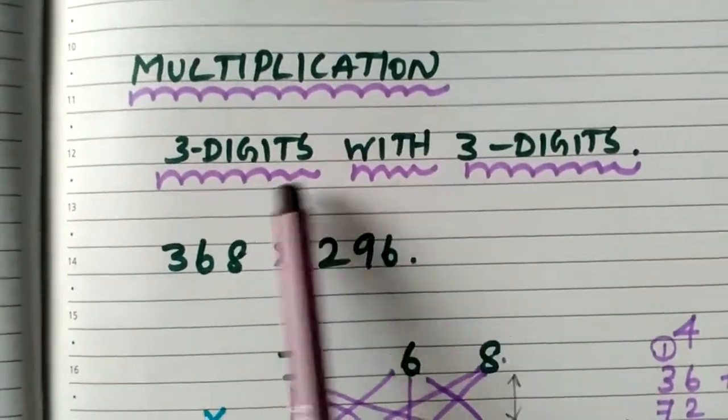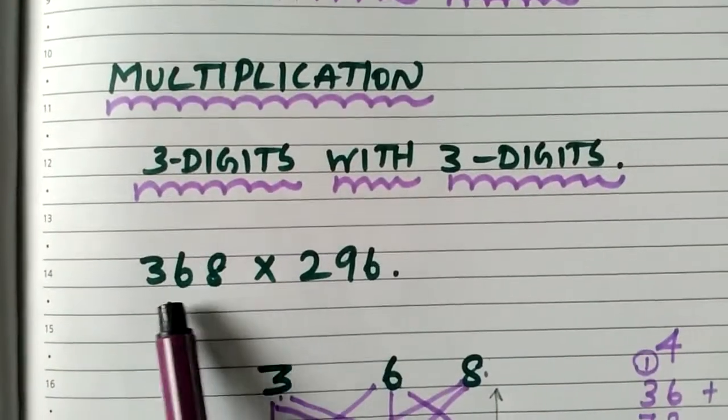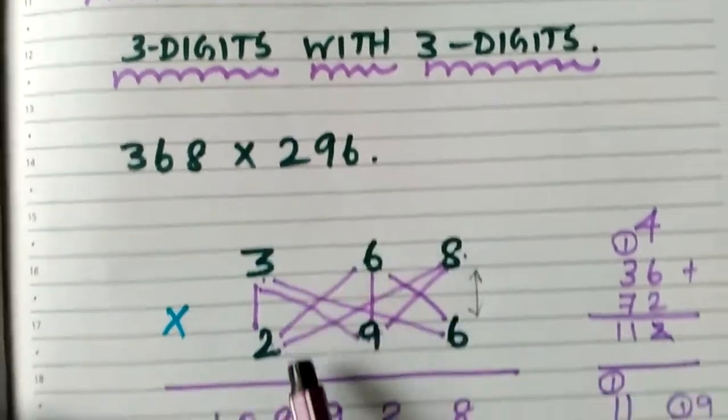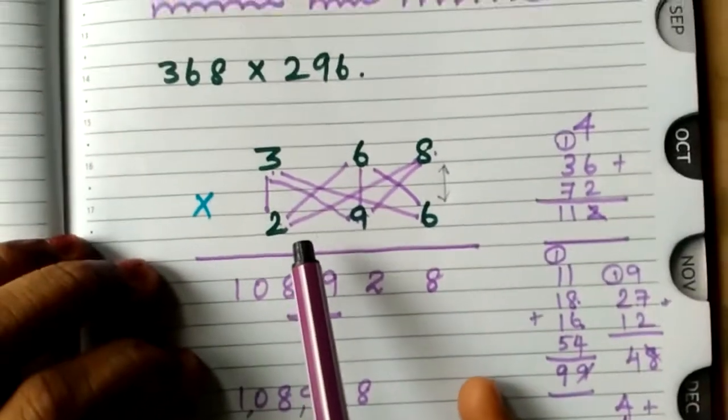Multiplication for 3-digit with 3-digit. So 368 multiply by 296. How are we going to multiply with the Vedic methodology? Let us see.